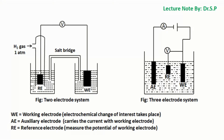In the three-electrode system, there are three electrodes: the working electrode, the auxiliary electrode, and the reference electrode. The auxiliary electrode, often also called the counter-electrode, is an electrode used in a three-electrode electrochemical cell for voltammetric analysis or other reactions in which an electric current is expected to flow.